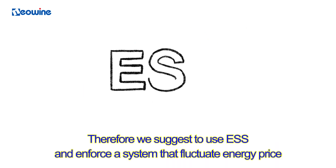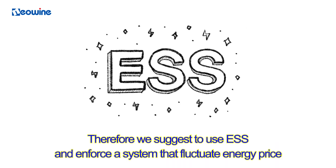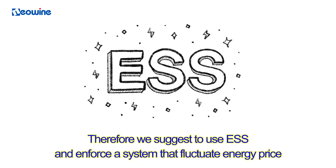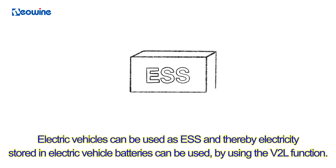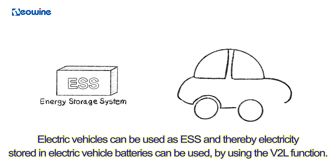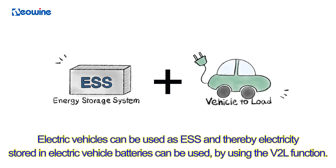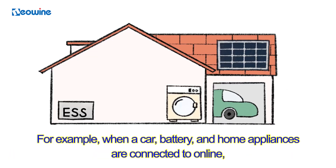Therefore, we suggest using ESS and enforcing a system that fluctuates energy price. Electric vehicles can be used as ESS, and thereby electricity stored in electric vehicle batteries can be used via the EV2L function.